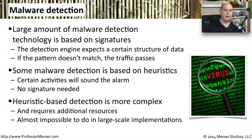Heuristic-based detection requires a number of additional resources. You have to have something in memory or executing to be able to identify what's happening on a system, and it has to be looking at many things all at the same time. In very large-scale implementations and very high-speed networks, this becomes almost impossible to do.